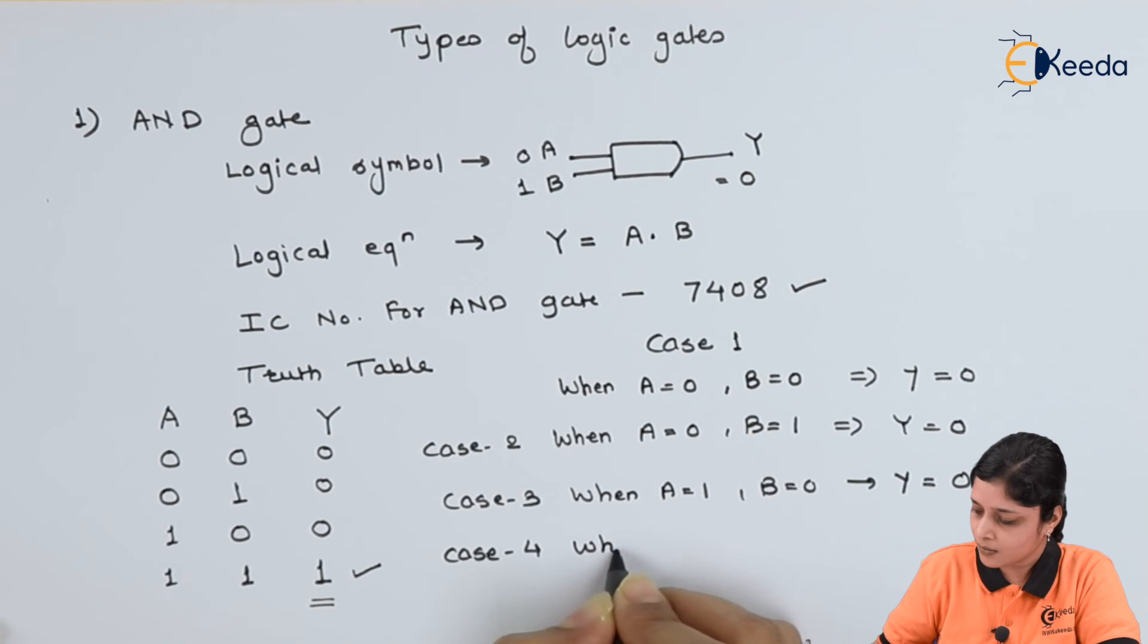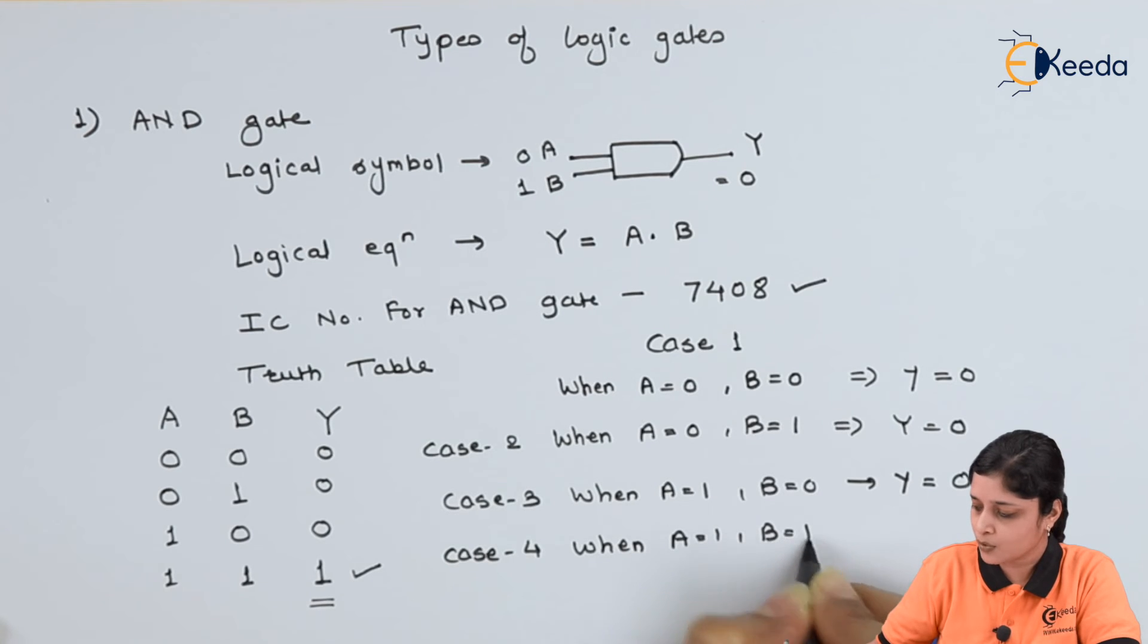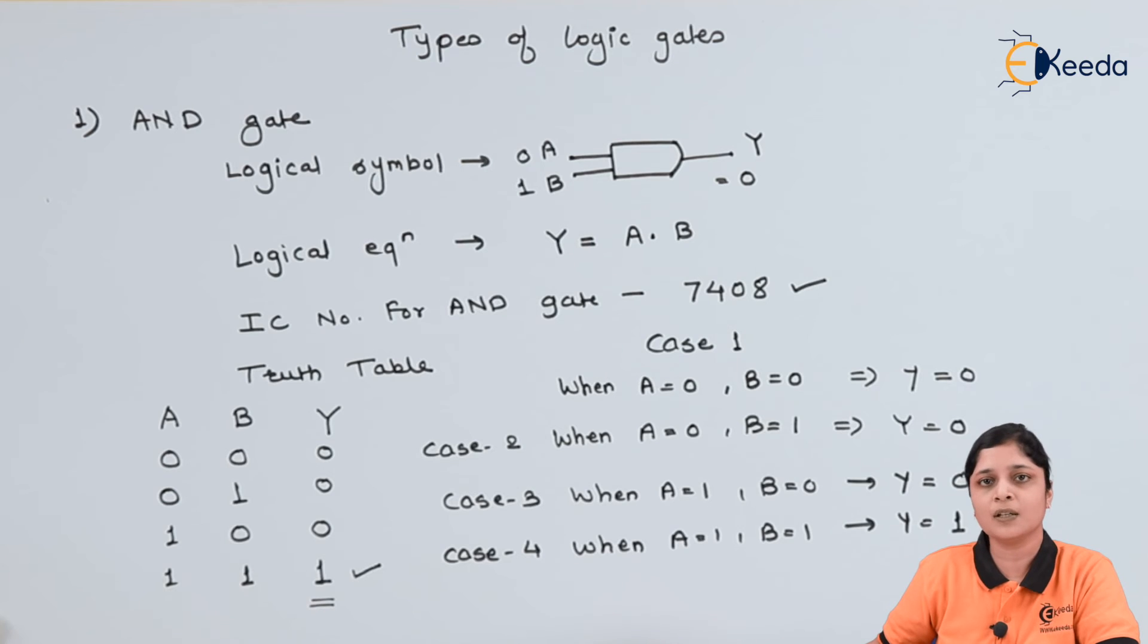Case 4, when A equals to 1, B equals to 1, then Y equals to 1 because both the inputs to the AND gate are high, that is logic 1, and 1 into 1 will give you 1 only.